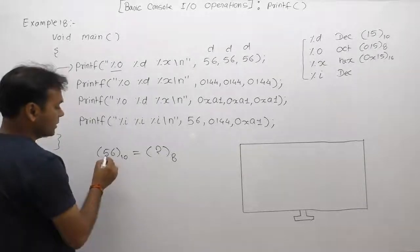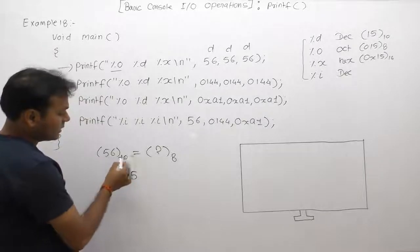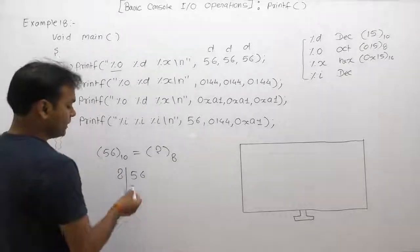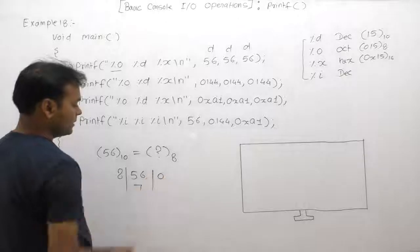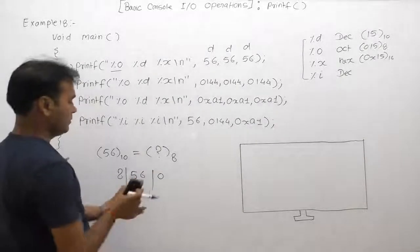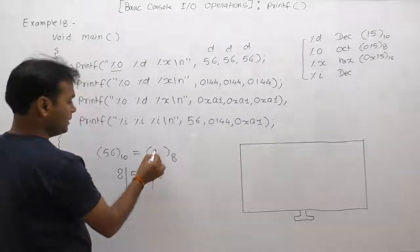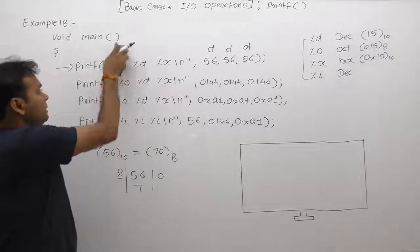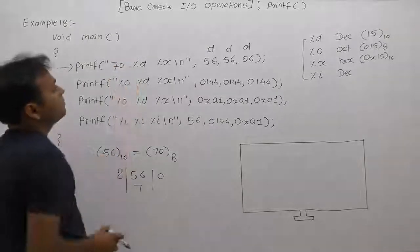Octal means base 8. To find the octal value, we perform a decimal-to-octal conversion by dividing by the required base, which is 8. The remainder is 0 and the final value is 70. So the equivalent octal value of 56 is 70.